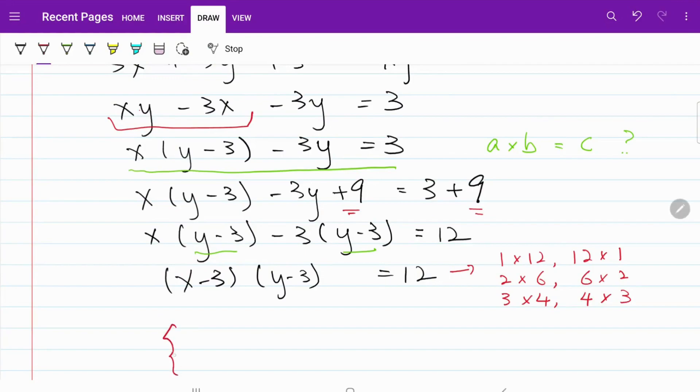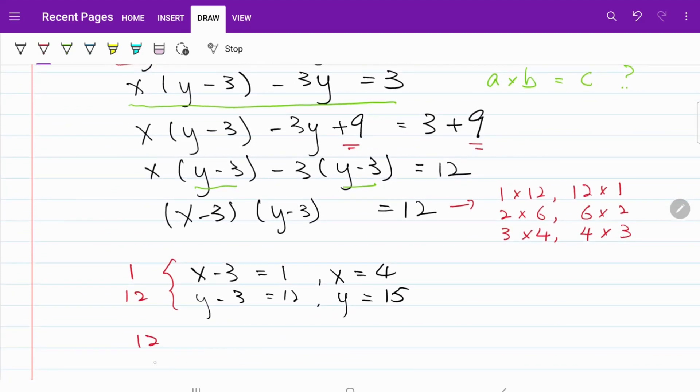The first combination: 1 and 12. I have x minus 3 equals to 1, x equals to 4, y minus 3 equals to 12, y equals to 15. And then I have the inverse, 12 and 1. x minus 3 equals to 12, x equals to 15, y minus 3 equals to 1, y equals to 4. That will be the answer for our first combination. x can be either 4 or 15, y can be either 15 or 4. Let's go ahead and try the second combination.